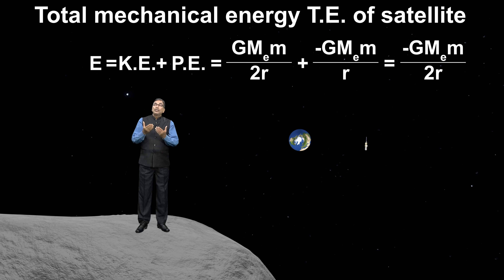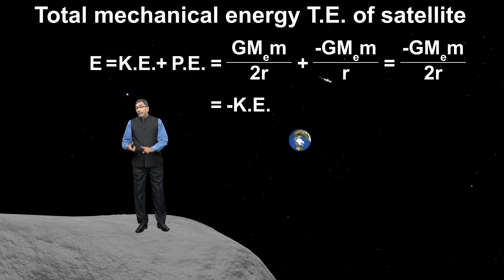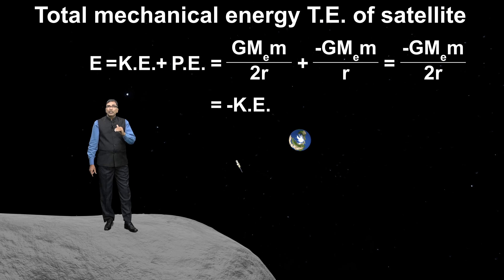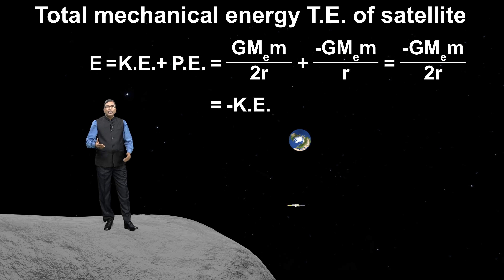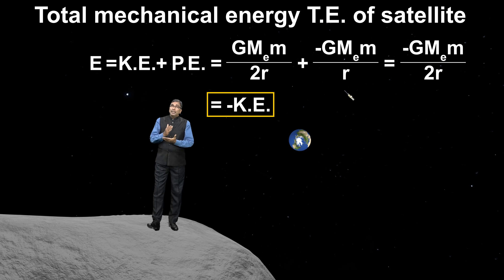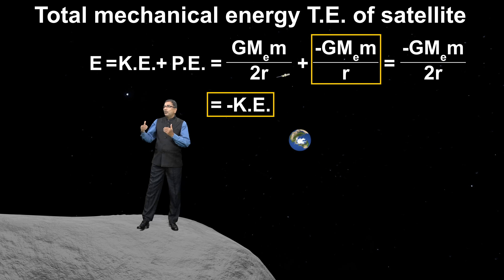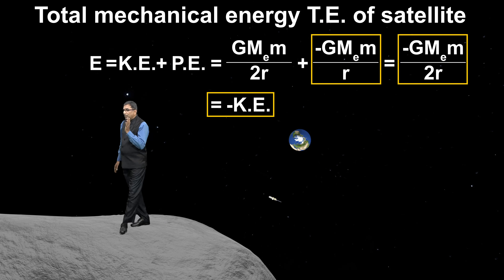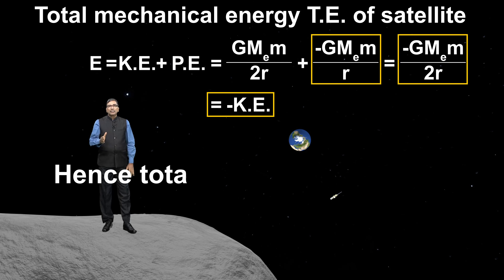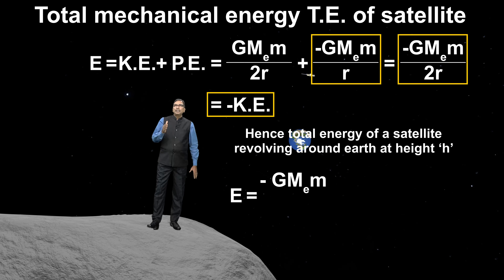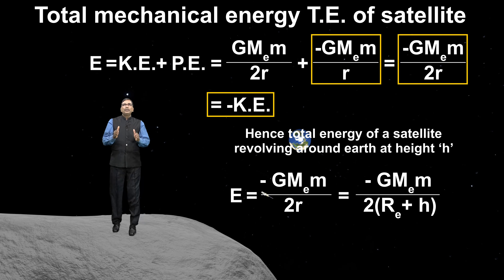Let us see what this total energy equals. This total energy is equal to minus of kinetic energy — kinetic energy being G Mₑ m upon 2r. Also, the potential energy is minus G Mₑ m upon r. This means the total energy is half of the potential energy. So total energy is equal to half of potential energy.